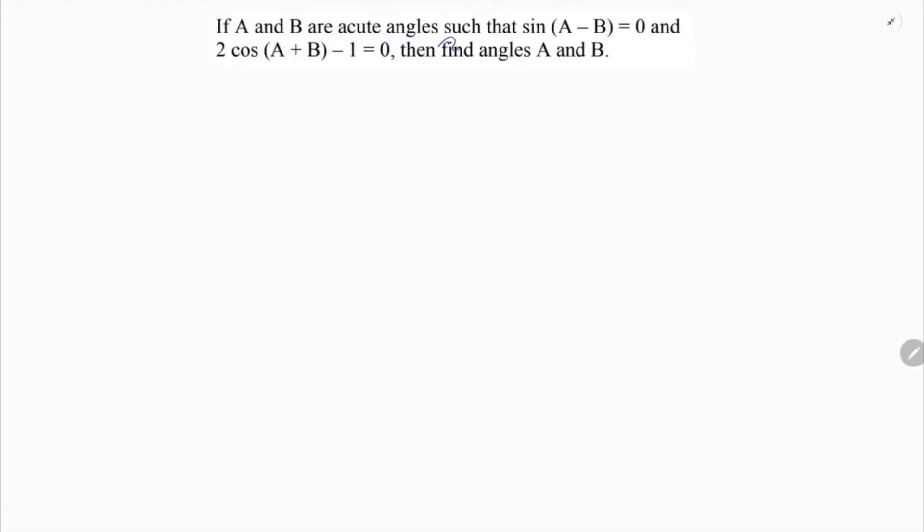If A and B are acute angles such that sin(A-B) equals 0 and 2cos(A+B)-1 equals 0, then find the angles A and B.